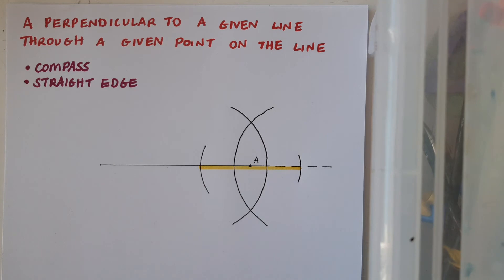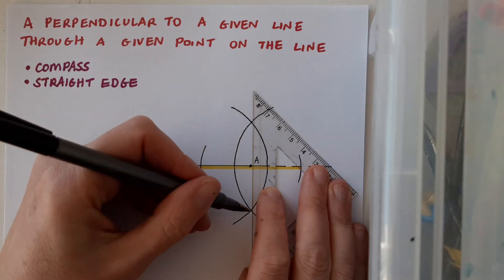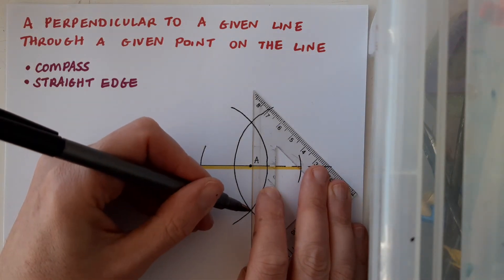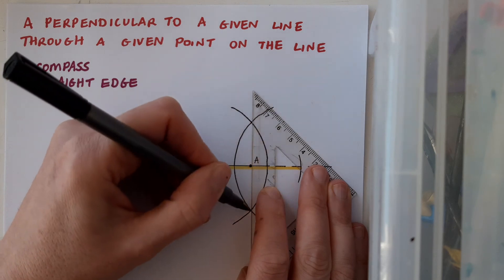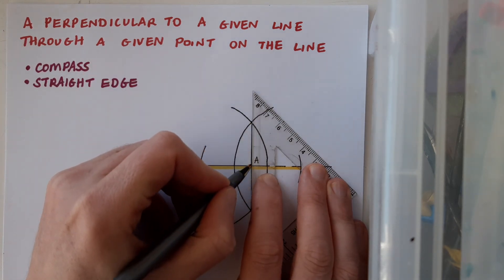And now to complete my construction I'm going to join the points of intersection of the two arcs together and I'll use my straight edge for this. Make sure it's lined up carefully and then draw the line and it should pass straight through the point A.